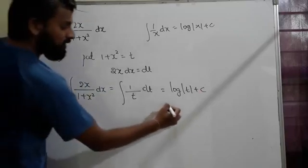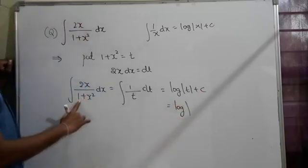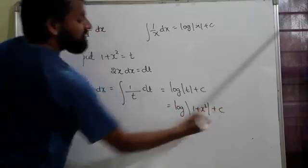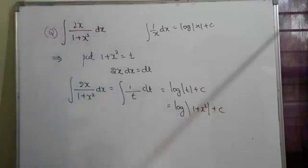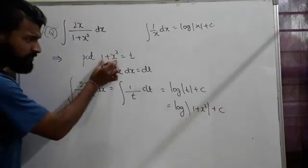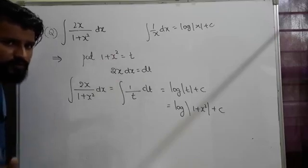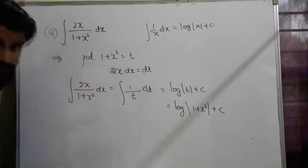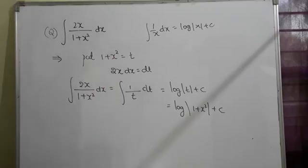In the last step, we replace t with what we substituted: log|1 + x²| + c is our answer. I hope you understand. Please pause the video and note it down.